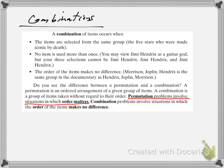So in a permutation, as an example, if I have the letters A, B, and C, and I'm trying to figure out all the different ways that I can order those, obviously I have A, B, C...